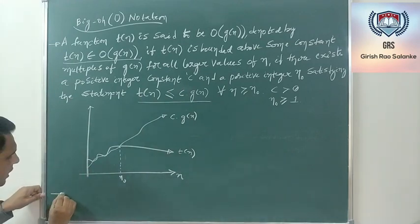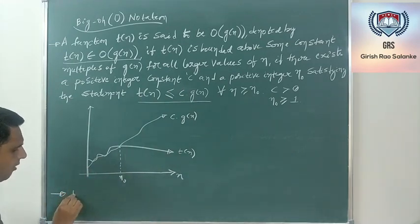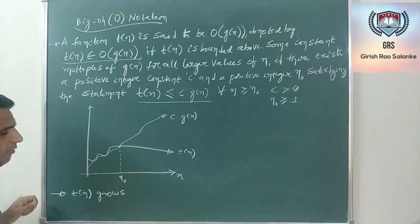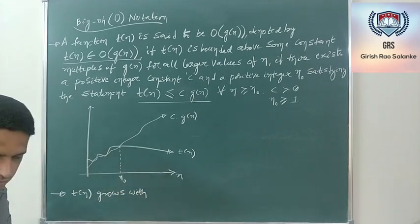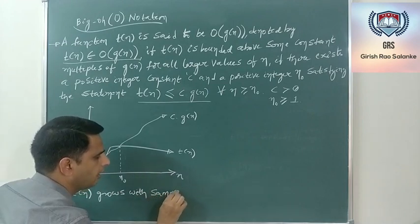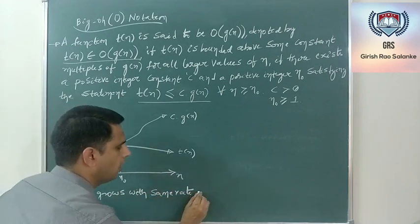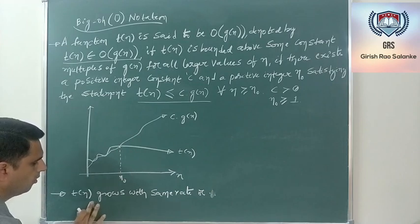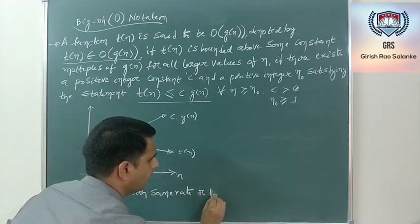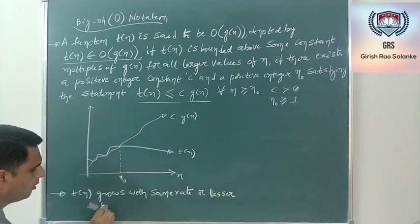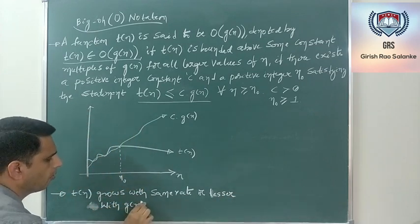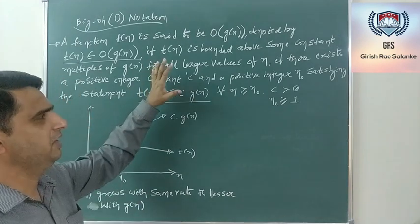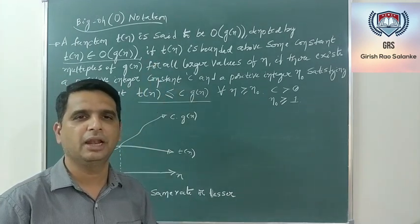In Big O notation, T(N) grows at the same rate or at a lesser rate compared to G(N). This is about the definition of Big O notation, and this is the most classic definition that you find in almost all textbooks related to algorithms.